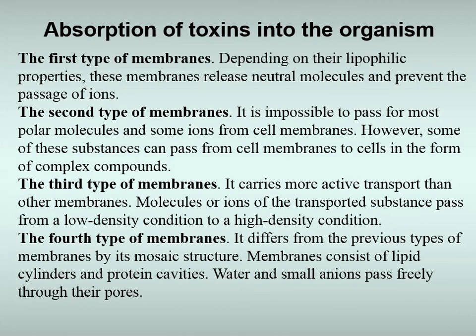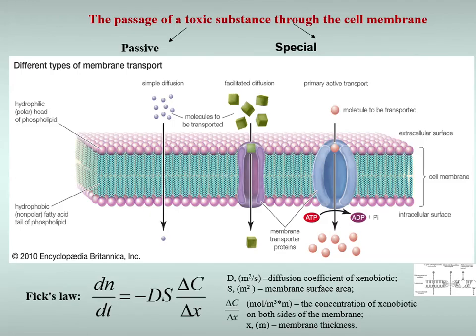Second type of membrane: for most polymer molecules and some ions, cell membranes are impermeable. However, some of these substances can pass from cell membranes into cells in the form of complex compounds. These complex compounds are formed as a result of the interaction of the corresponding substance molecules with carrier or transport system molecules contained in the membrane. Carrier molecules include enzymes, some membrane-specific proteins, and other substances. After entering the cell, the complex compounds break down, releasing the polar substance.